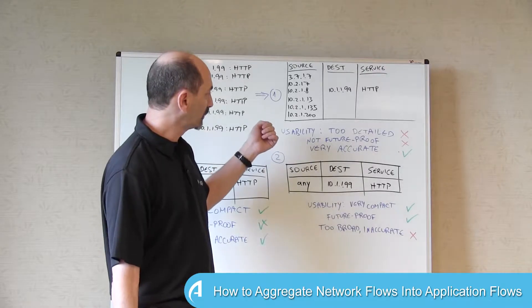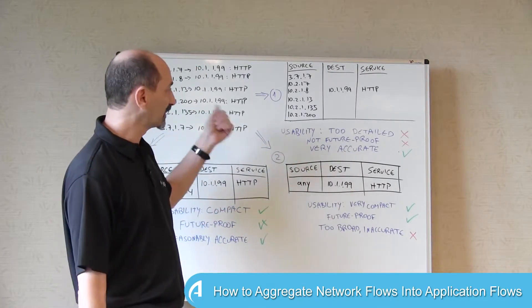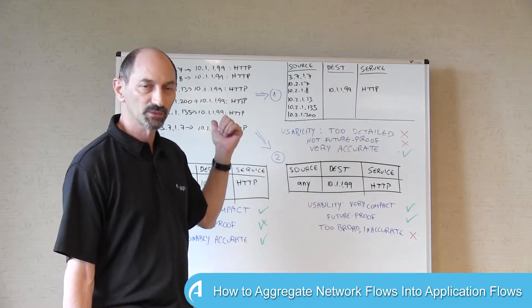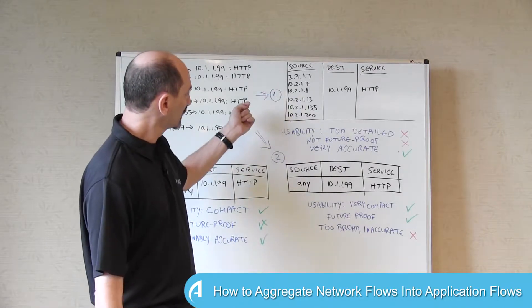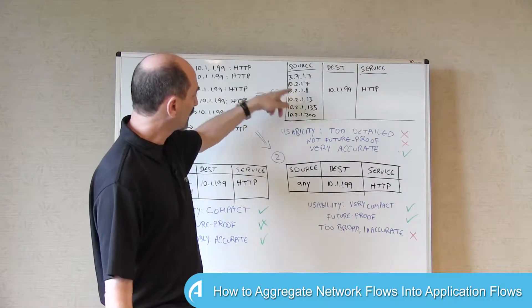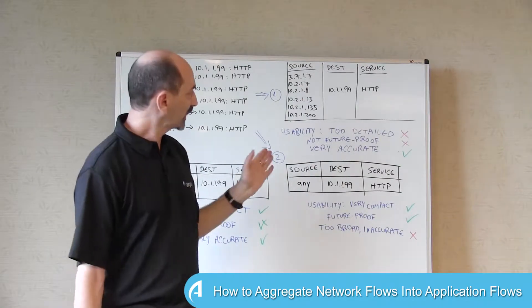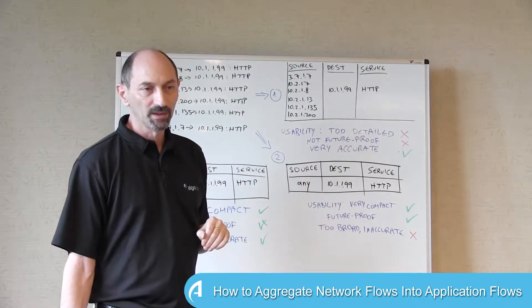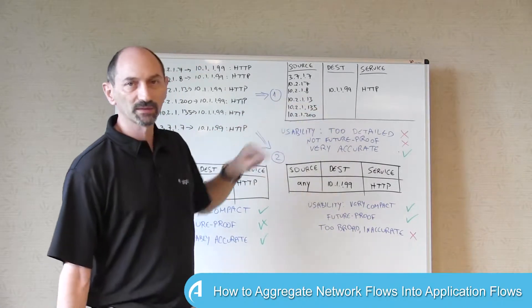It's also very accurate. It's too accurate. It records exactly the IP addresses that were seen in the network capture, but it's not future proof. If you look at this list, you can see that IP address .7 and .8 and .13 connected to this destination, it's quite plausible that IP addresses .9, .10, .11, and .12 would also connect to the same web server at some point in the future.